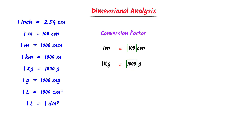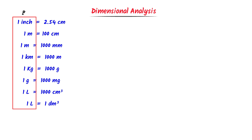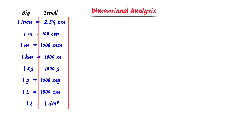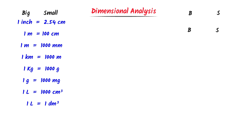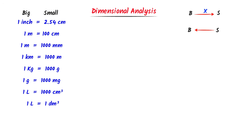Now, consider this list of some basic units. Remember that on the left side are bigger units, while on the right side are smaller units. My personal trick is SBS — bigger and smaller. If I go from a bigger unit towards a smaller unit, I multiply by the conversion factor. If I go from a smaller unit towards a bigger unit, I divide by the conversion factor.